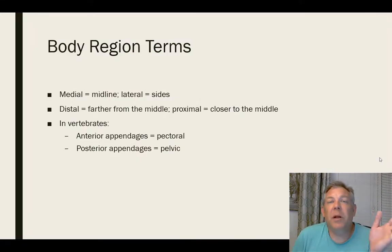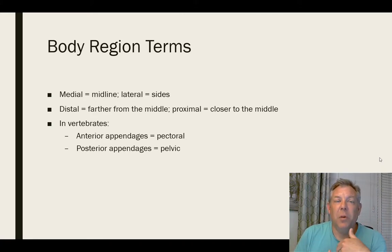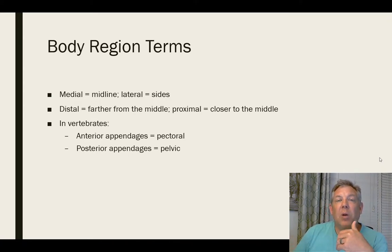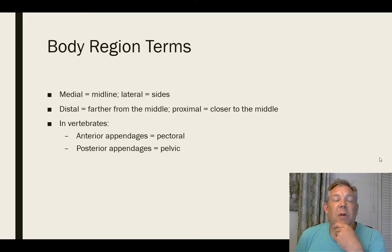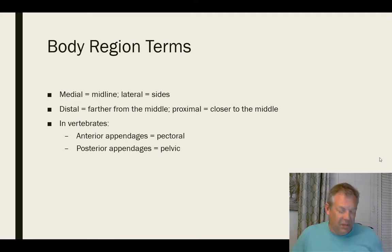Some other vocabulary you'll need to know when describing animals: medial means the midline, toward the middle of the organism. Lateral means the sides or out toward the edges, away from the midline. Distal is farther from the middle; proximal is closer to the middle. For vertebrates, we also have: the anterior appendages are the pectoral appendages, and the posterior appendages are the pelvic appendages. Just think of where your pecs are and where your pelvis is to help you remember.